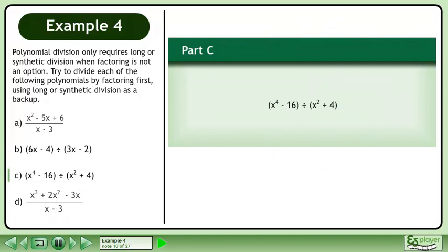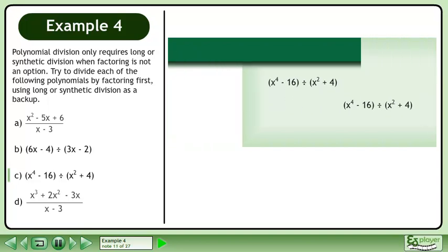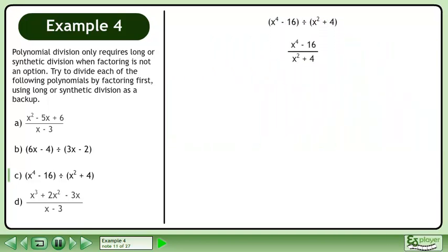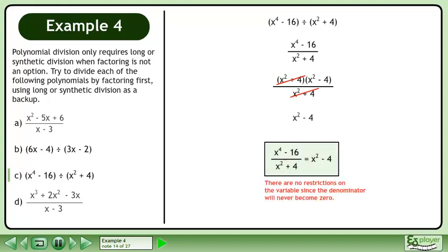In part c, we'll divide x⁴-16 by x²+4. We write the division as a fraction. x⁴-16 is a difference of squares. Factor to get (x²+4)(x²-4). Cancel out x²+4 from the numerator and denominator. The result of the division is x²-4. There are no restrictions on the variable since the denominator will never become 0.